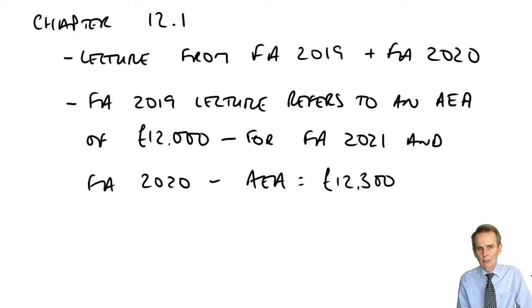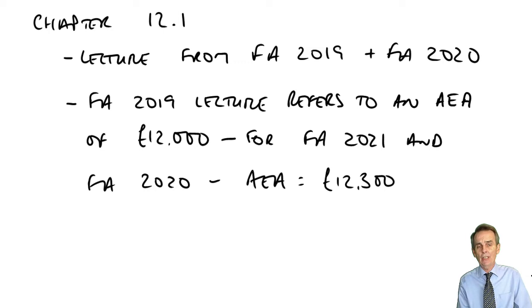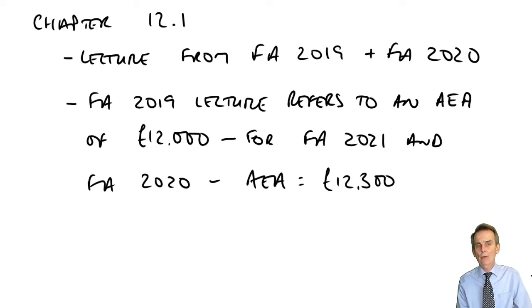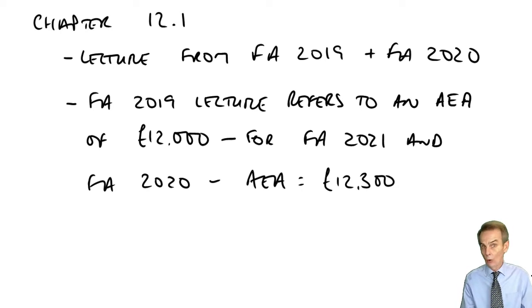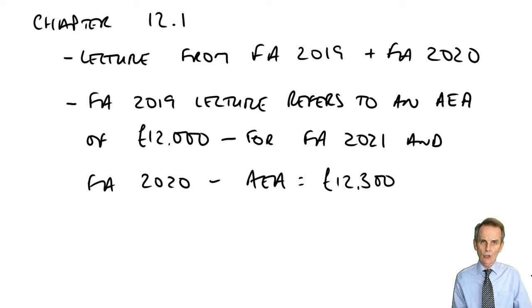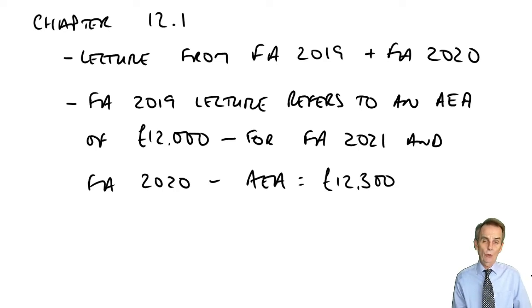As we briefly discussed at the end of our previous lecture dealing with national insurance contributions, Chapter 12 introduces us to CGT. Very specifically here in Chapter 12.1, we look at the basis of computing a gain for an individual. Once we've calculated either a gain or indeed a loss, there is no guarantee when you buy what you'll see in a moment as a chargeable asset that you will at some future point be able to dispose of it.